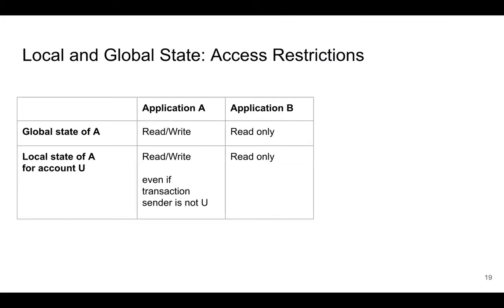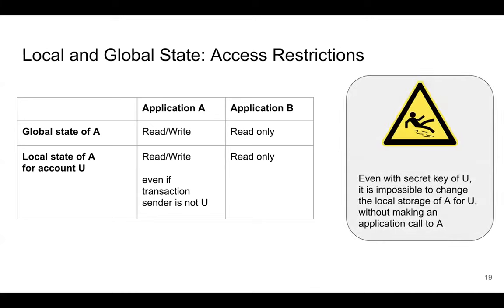Regarding access restrictions: if you're application A, you can read and write your global state and the local state of accounts you want, up to the per-transaction limit. Another application can only read your state — it cannot write to it, since everything on the blockchain is public so reading is always allowed. Importantly, even if the sender is the account whose local state is stored, the application controls that local state — not the account owner. Even if you know the secret key of an account, you cannot modify its local state; only the application has that right.